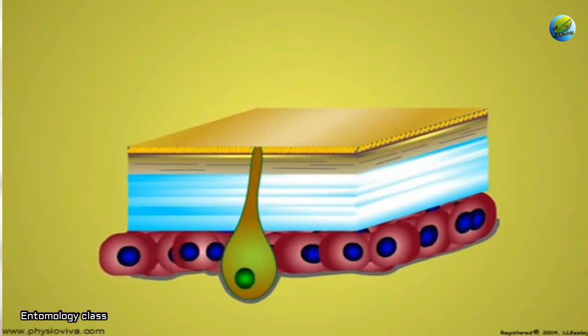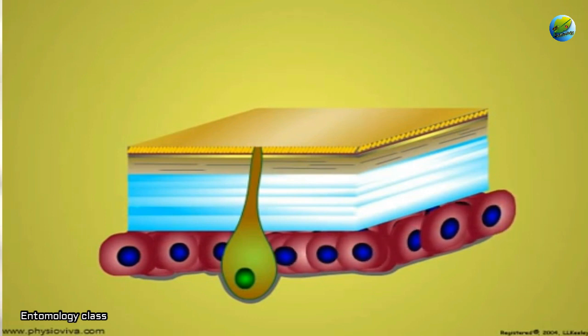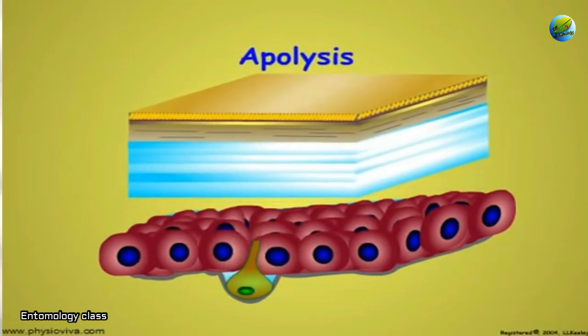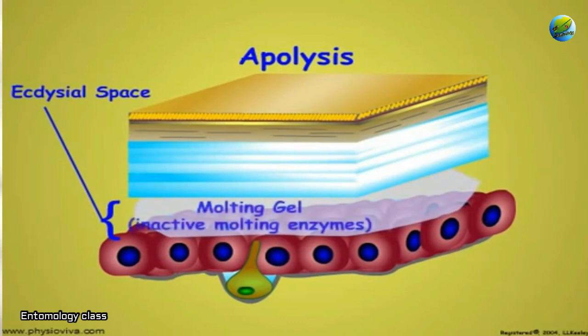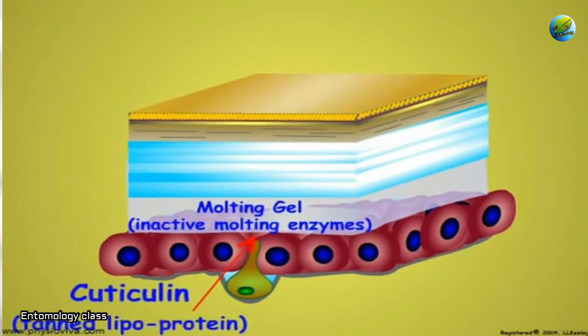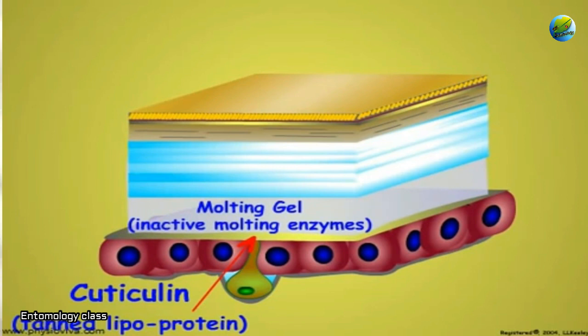At that time, protein synthesis increases, leading to the formation of a gap between the epidermis and the cuticular part. In between the epidermis and the cuticular part, inactive molding fluid is secreted by the epidermal cells. After this secretion, a new layer called the cuticulin layer is secreted by the epidermal cells. The cuticulin layer protects the epidermal cells when the molding fluid is activated, and it becomes part of the new epicuticle.